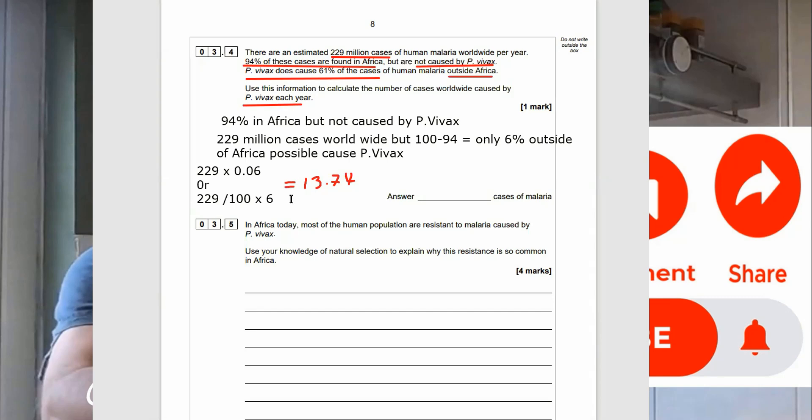Now, it told us those are the amount of cases that happen outside Africa that could be caused by P-vivax. But we were told that only 61% of these were caused by P-vivax. So, now do 0.61 times 13.74, and you're going to get something like 8.38 million. Round it down to one decimal place to 8.4 million. And that's your number of cases of malaria.